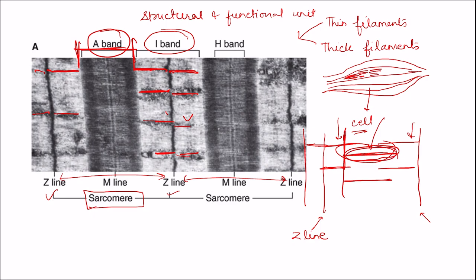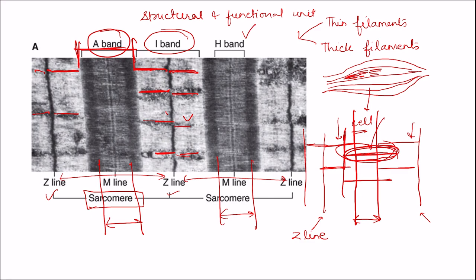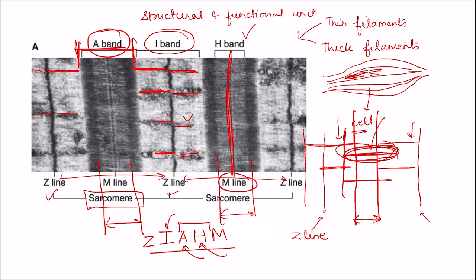The A band is the entire thick filament, whether overlapped or not. The central part of the A band is not overlapping, and in the electron microscopic structure this appears as a lighter zone — this non-overlapped region of the A band is known as the H band. In the center of the H band we have the M line, which is darker. So the arrangement from outer to inner from the Z line is: I band, A band, H band, and M line.